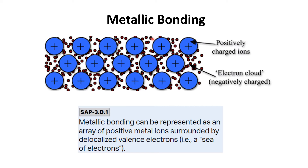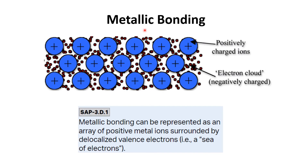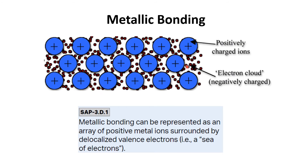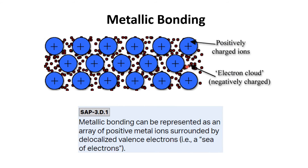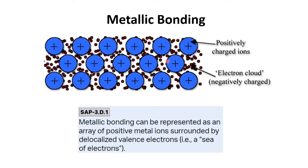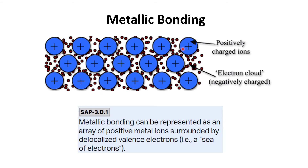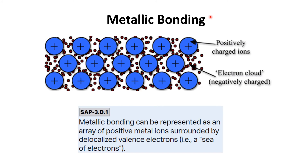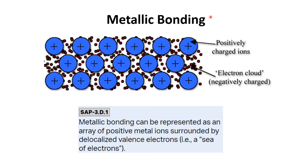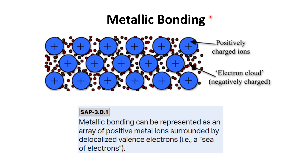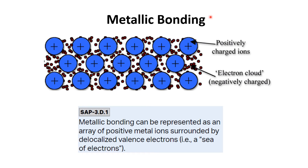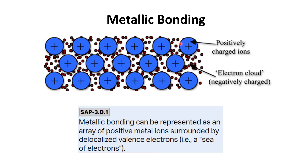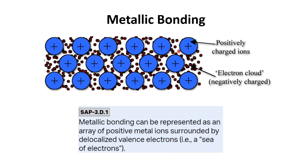As mentioned in topic 2.1, there are three types of chemical bonding: ionic bonding, covalent bonding, and metallic bonding. Metallic bonding is found in metals as well as their alloys. When atoms give up their valence electrons, they form ions, and these ions are held together by the electron cloud surrounding them. The cloud of free electrons is highly mobile, which results in good electrical conductivity.